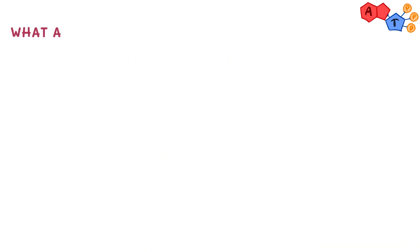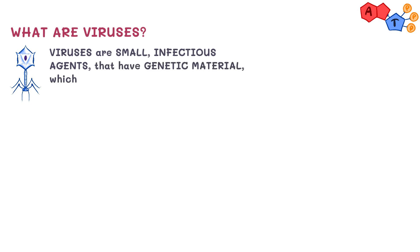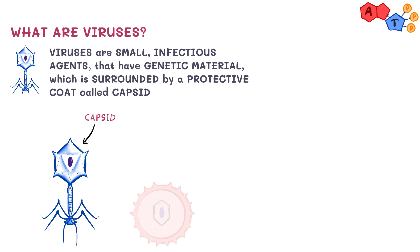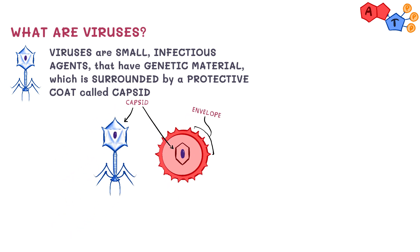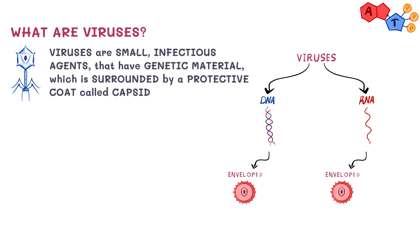So what are viruses? Viruses are small infectious agents, or intracellular parasites, that have genetic material surrounded by a protective coat called a capsid. Some viruses have more complex structures — in addition to the capsid, some have envelopes on the exterior. The genetic material can be either DNA or RNA, and on this basis we can classify viruses into enveloped or non-enveloped viruses. Non-enveloped viruses are also known as naked viruses.